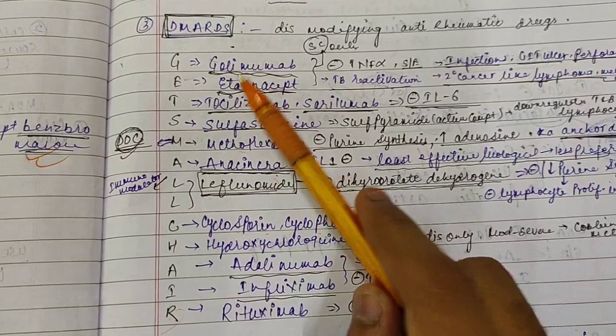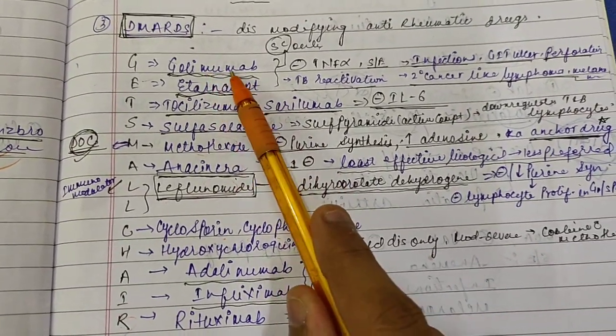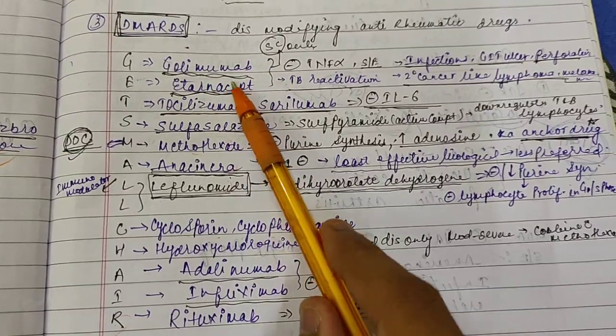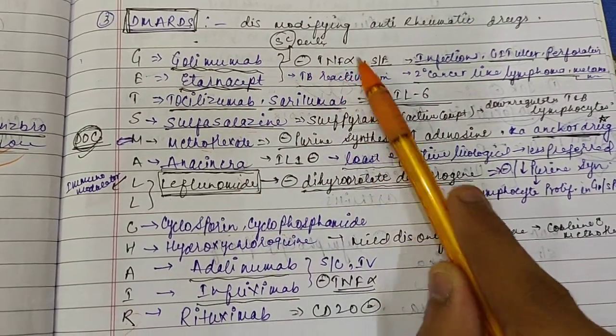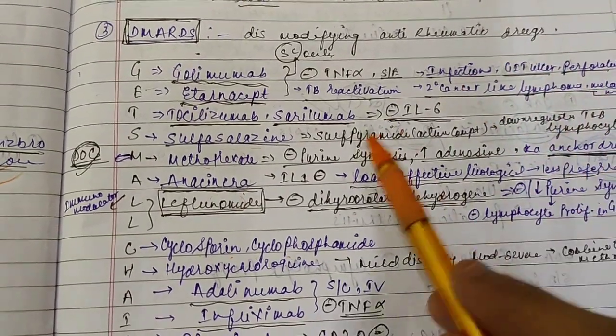So these are the drugs which are used in rheumatoid arthritis. Now coming to the individual drug, so this Golimumab and Eternasef, both are inhibitor of the interferon alpha. Side effect is infection, GIT ulcer perforation. It can also cause TB reactivation, secondary cancer like lymphoma can also occur.